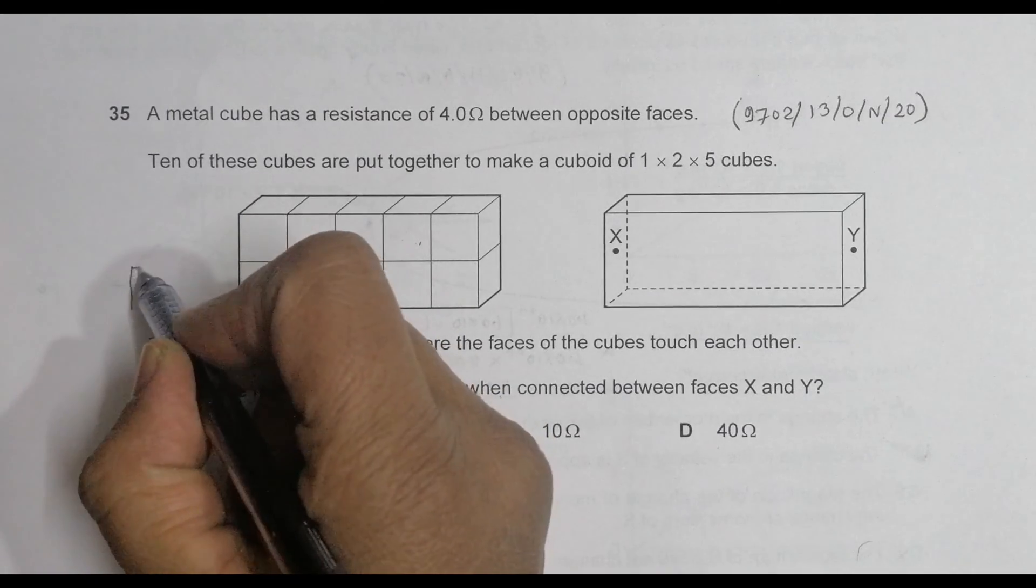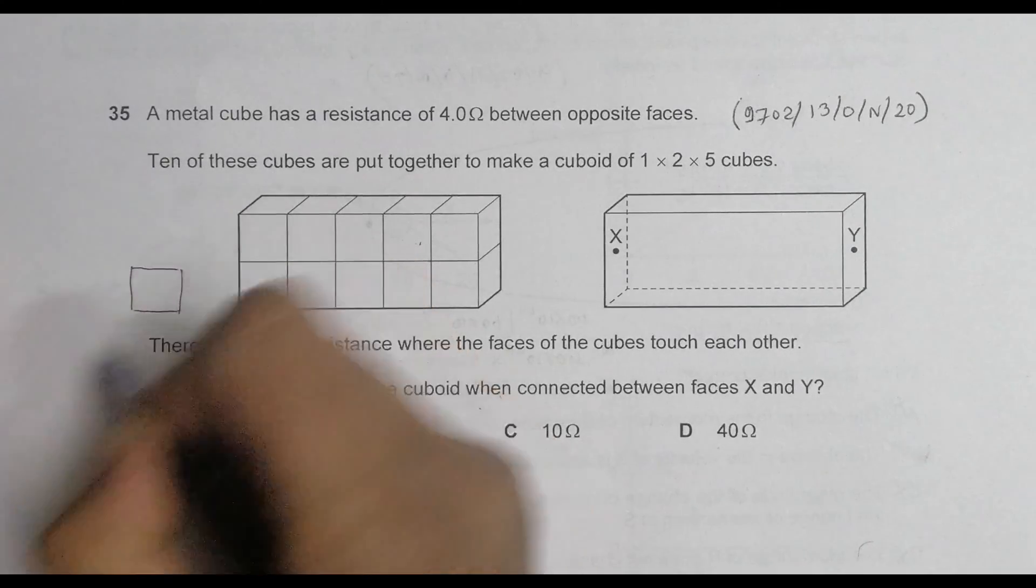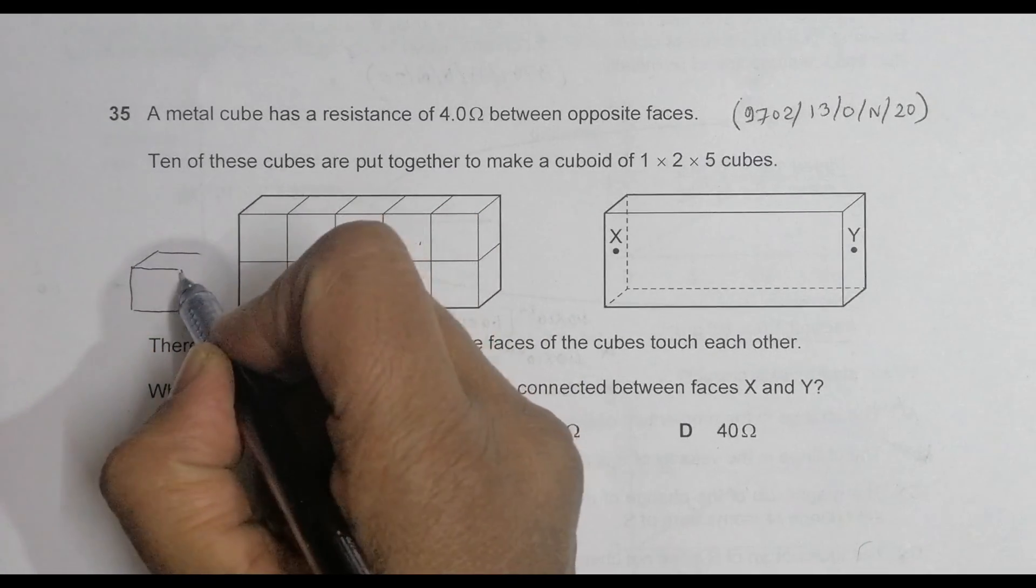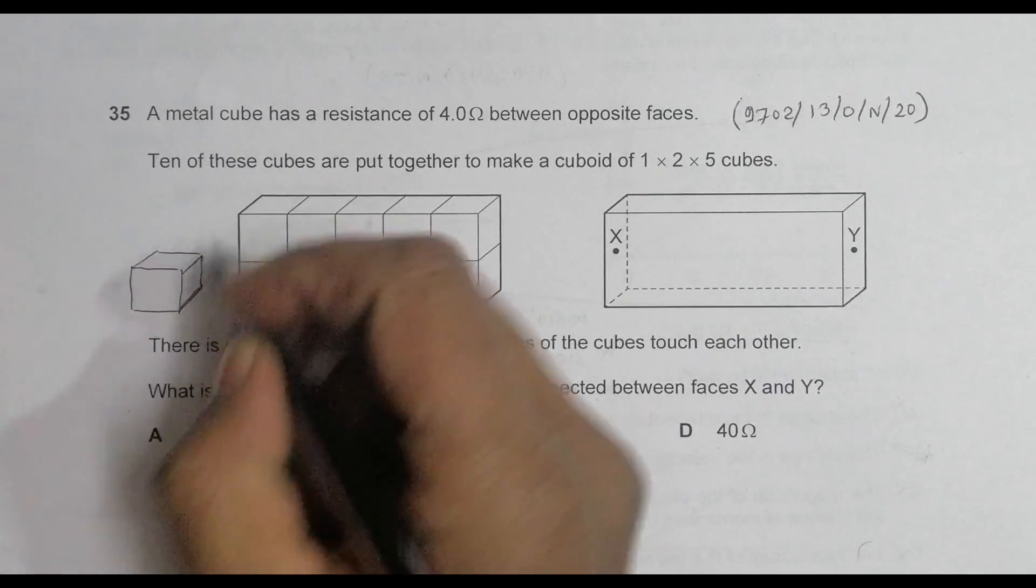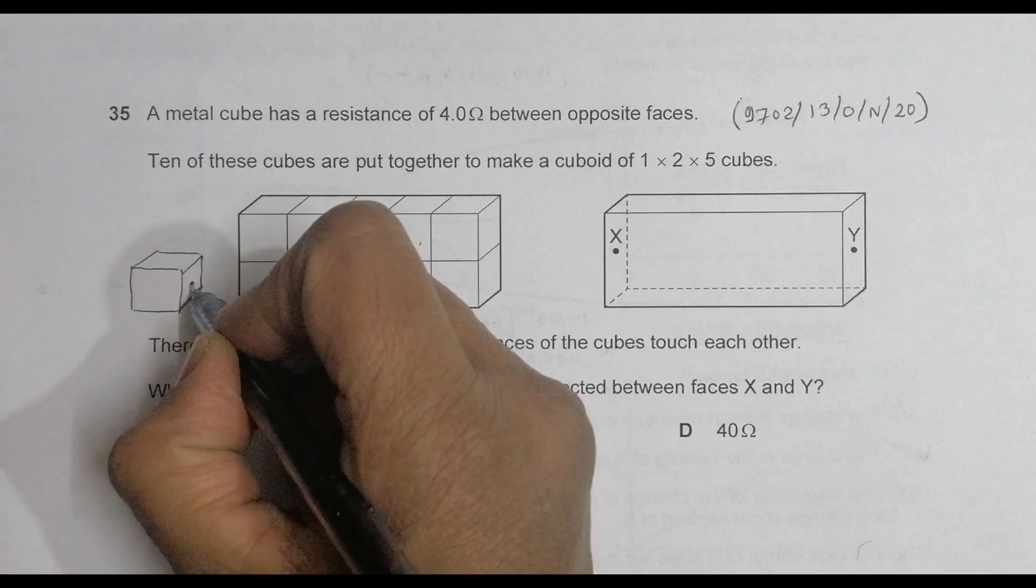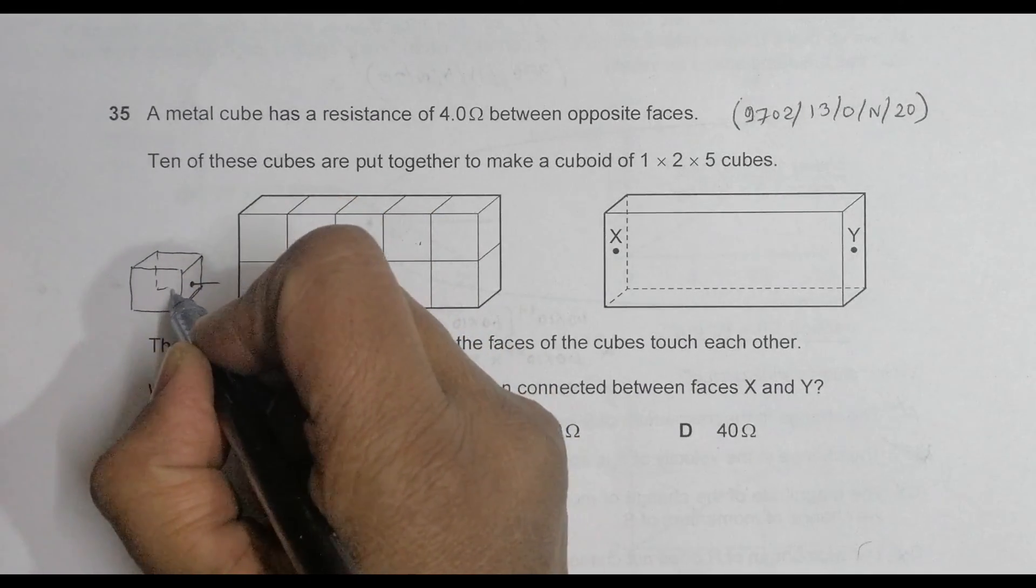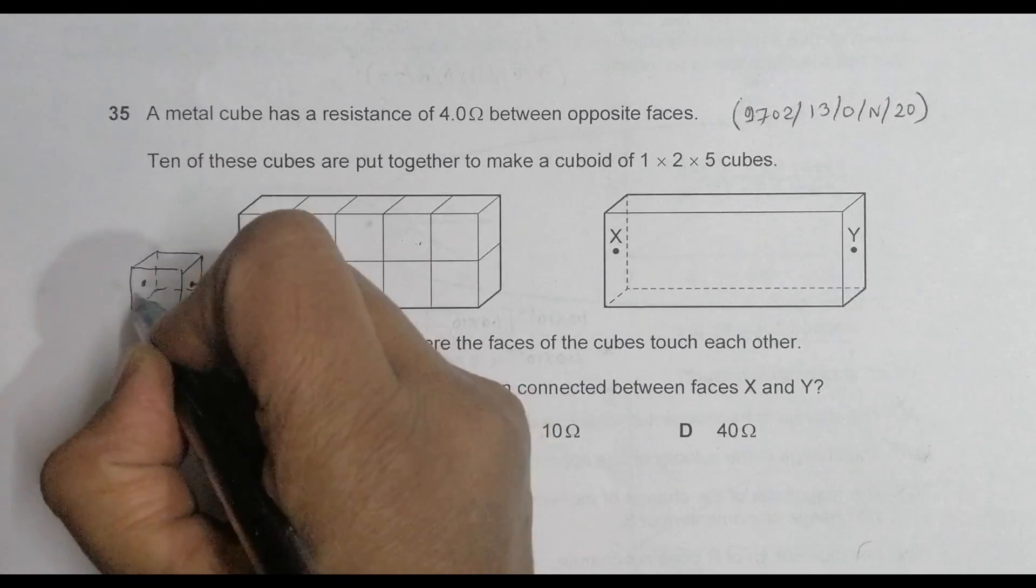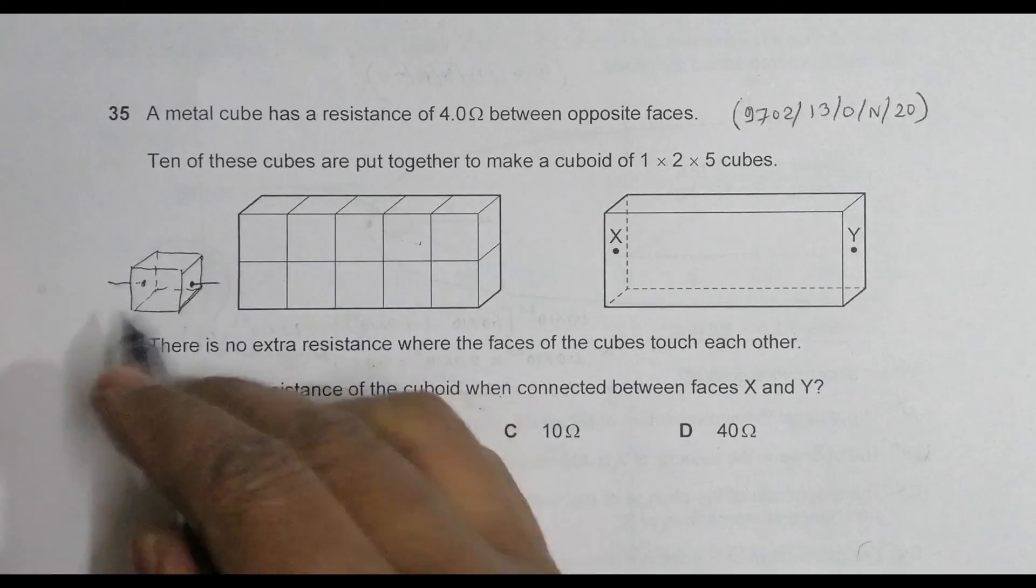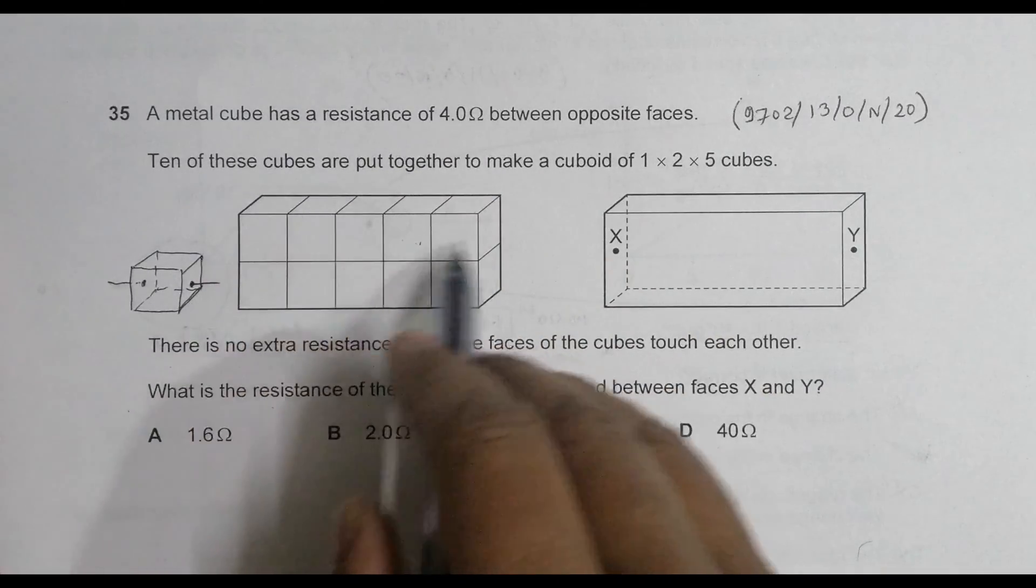So that means we have a small cube first whose resistance across its opposite faces is 4 ohm. If I measure from here to here, this is the other face, or from here to here. So if I measure from here to here it is 4.0 ohm. So 10 of these cubes...